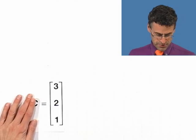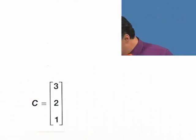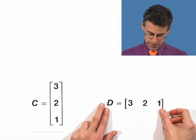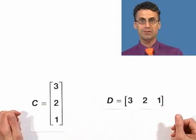How about these two matrices right here? Here's C, 3, 2, 1, and matrix D, 3, 2, 1. Again, they're equal.